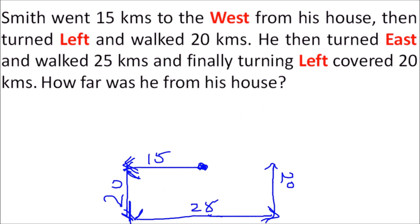Then he turned East — this is Type 1 again, so East is determined from the starting point reference, which is this direction — and walked 25 kilometers. Finally, he turned left again — Type 2 — so rotating the screen, left is this direction, and he covered 20 kilometers. The net horizontal distance: 25 minus 15 equals 10 kilometers. So he is 10 kilometers from his house.